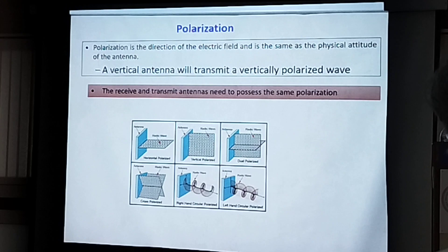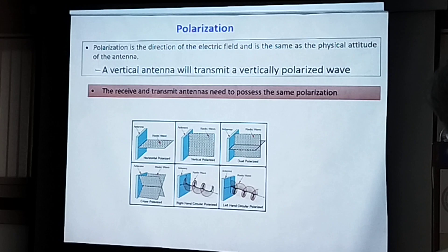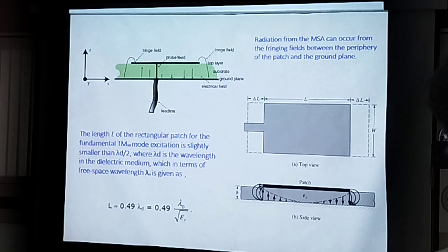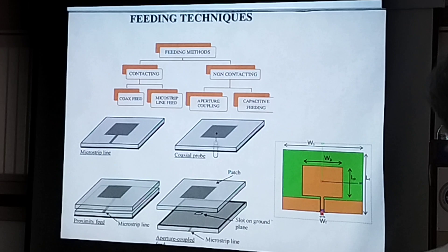There are different types of polarizations: linear, circular, and elliptical polarizations. I am keeping this brief because I am assuming you know the basics about antennas.